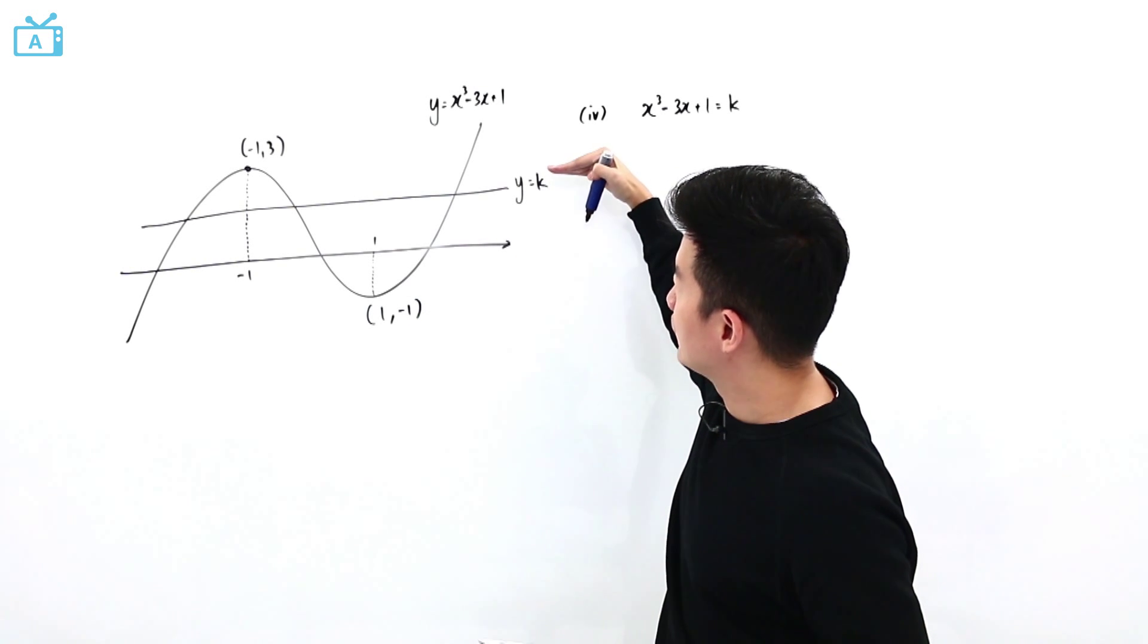Which means that this line, when the value of k must be between minus one and three. That is why I can say that k is going to be all real numbers such that k is supposed to be between minus one and three.